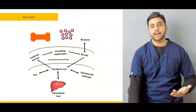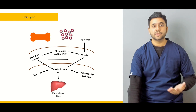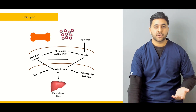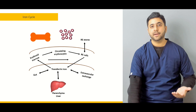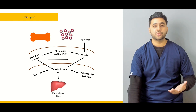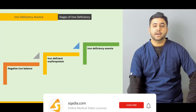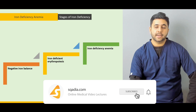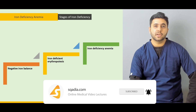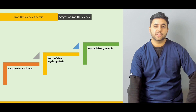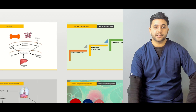We are going to discuss the iron metabolism with the help of the iron cycle. We are going to discuss how transferrin moves iron, what is ferritin, and what is its role in iron metabolism. Then we will cover what goes wrong that leads to iron deficiency anemia, what are the various stages of iron deficiency anemia, and how the various markers give us an indication of the different stage.